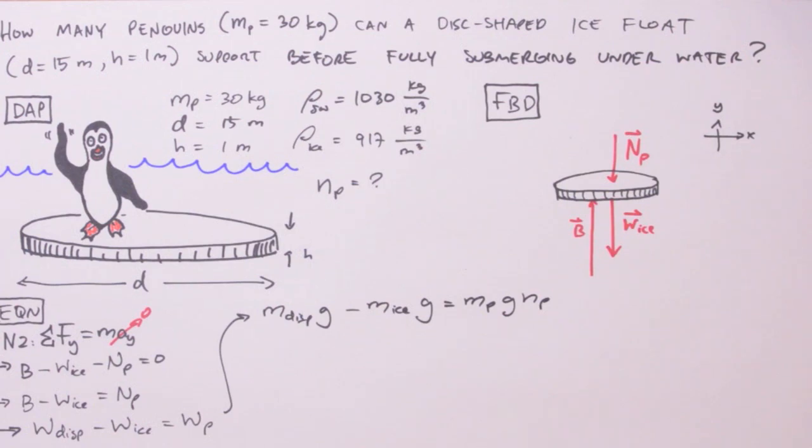Now we don't have the mass of the displaced fluid, nor do we have the mass of the ice, but what we do have are densities and volume vis-a-vis the dimensions of the ice float. So for the mass of the displaced fluid, we're going to use the density of the displaced fluid times the volume of the displaced fluid, and that's times G. Minus, and substituting for the mass of the ice, we'll have the density of the ice times the volume of the ice times G equals MPGNP.